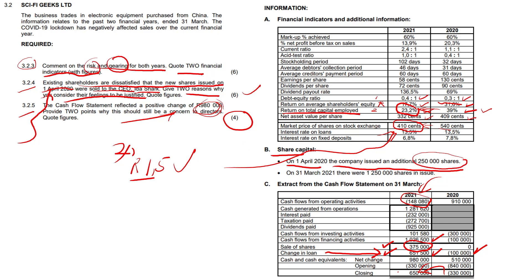Here are the key points. Number one: cash flows from operating activities is a negative 148,080 — something appears amiss there. Number two: 375,000 came in from the sale of shares. Number three: a further 650,000 odd came in from borrowing more money, and suddenly the company is looking good. But think of it this way — you have no money in your bank account.